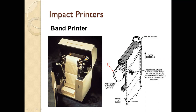The character is here, and there is a ribbon and paper. The band rotates at 1,050 RPM — revolutions per minute. So the rotating band completes 1,050 revolutions per minute. This is the rotation speed of the band in a Band Printer.